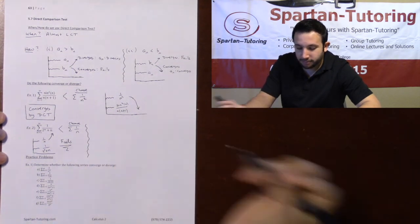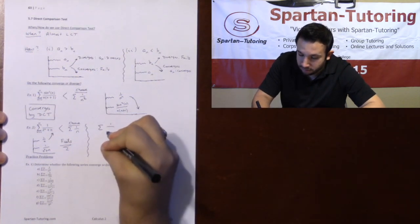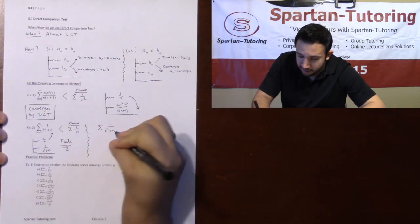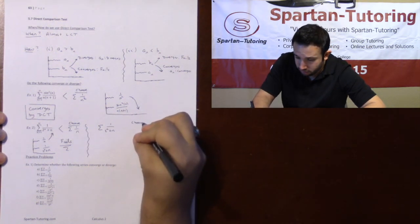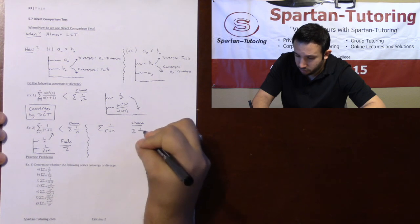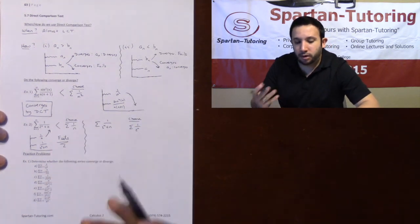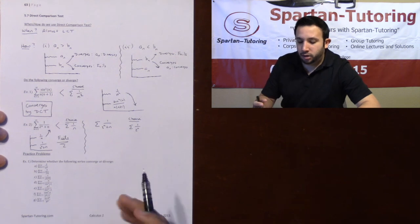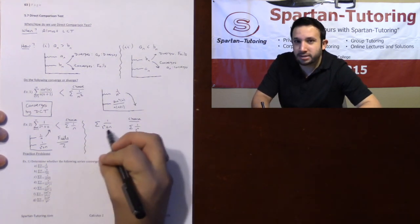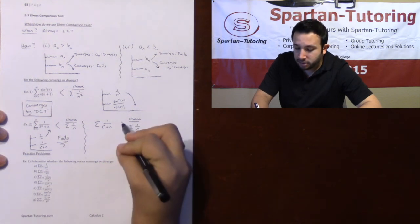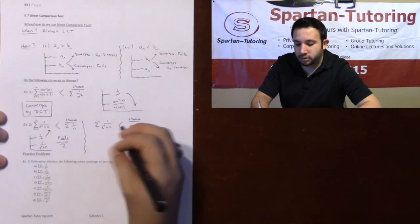Let's try again with one over (two to the N plus N). This time, let's choose one over two to the N — you always want to make it as similar as possible so you can more easily see whether it's bigger or smaller. By the same logic, I'm adding stuff on the bottom, so one over two to the N is bigger than one over (two to the N plus N).